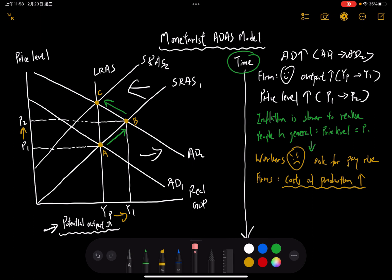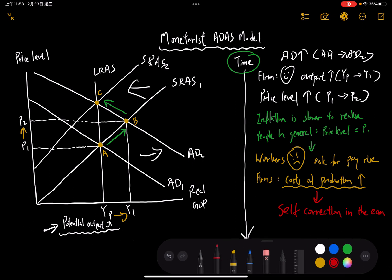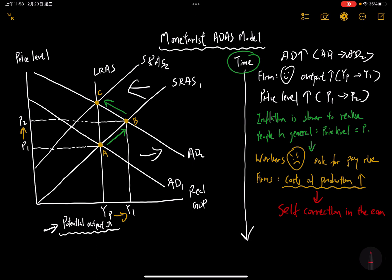You will actually find a self-correction in the economy at the end. Because look at this. What is going to happen when we eventually get to point C? Look at your real GDP, look at your real output. It is going back. For the real GDP, it is going back to YP, which is your potential output.